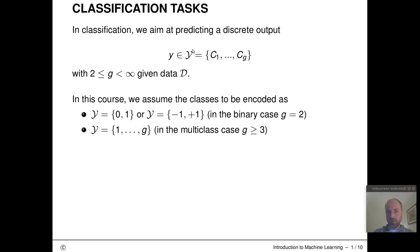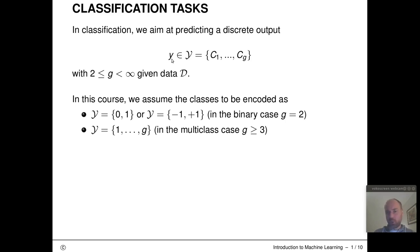Formally, we will define our output space of admissible labels, curly Y, as a finite set of labels, which we could denote with C1, C2, up to CG, where G is the finite number of admissible class labels. Each object from our training data is assumed to come from exactly one of these G classes, and during prediction, we also have to assign exactly one of these G classes to each observation X.